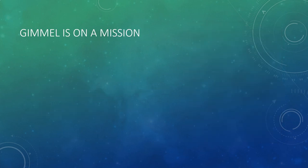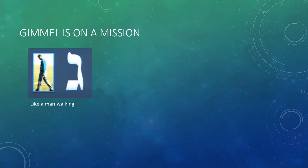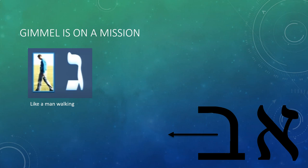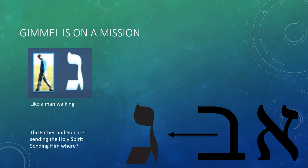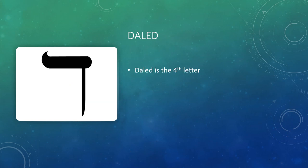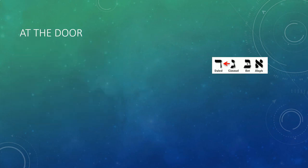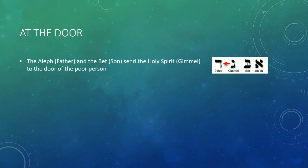Gimel is on a mission. The rabbis explain that the letter Gimel looks like a man walking. Coming out of the Aleph and Bet is the Gimel, representing the Holy Spirit — but where is the Holy Spirit going? You can see the direction of where he's walking is away from the Aleph and Bet, towards a goal and a destination. The Father and Son are sending the Holy Spirit to the next letter, the Dalet. Dalet is the fourth letter and it represents a door — but it also means a poor person, someone who is broken and struggling. So the Holy Spirit is being sent on a mission from the Aleph and Bet to the door of the poor and humble and desperate person.